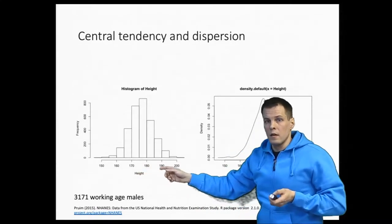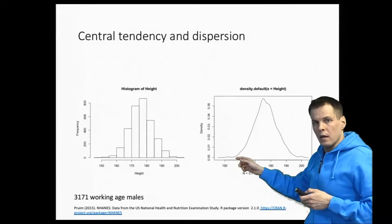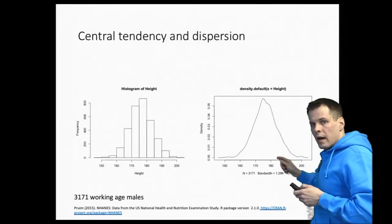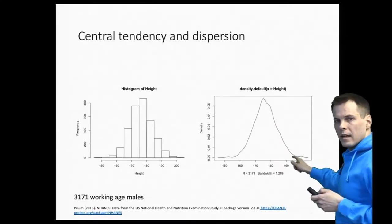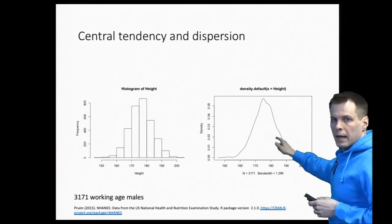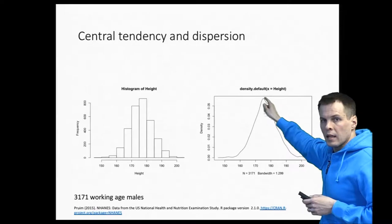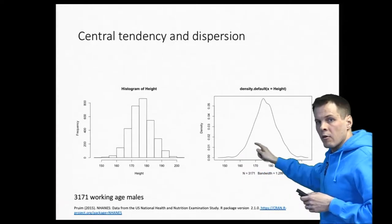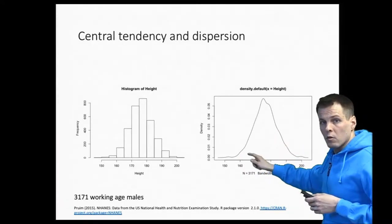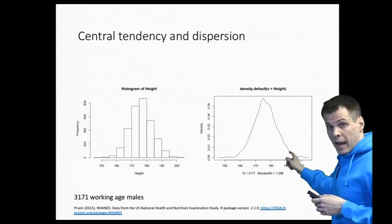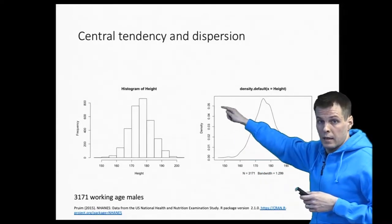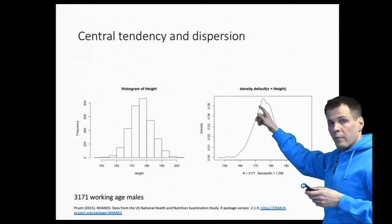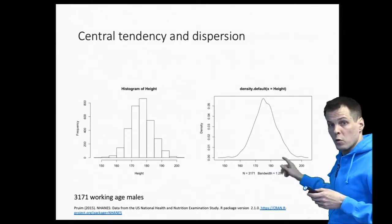We also have the kernel density plot of the same data. The kernel density plot shows the distribution in another way — we just have a line, and this is the probability density function. The height of the line tells us the relative probability of observing a person at one height versus another. The area under the curve is always one, so if the x-axis scale is in the tens, then the y-axis scale must be in the 0.0-something range. This shows that most people are in the middle, with a few very short and a few very tall people.